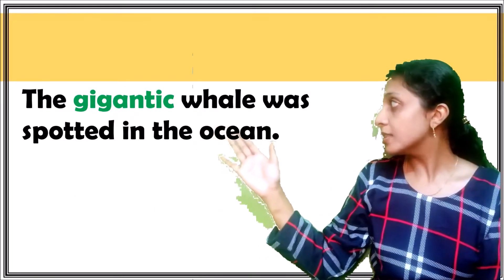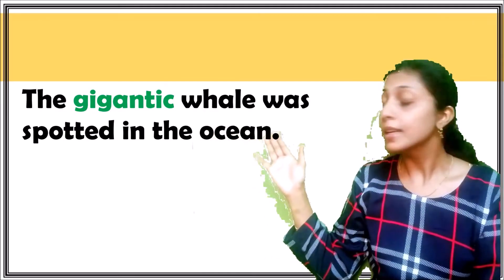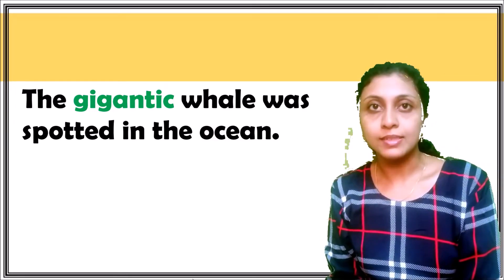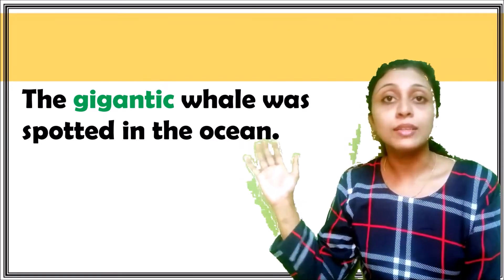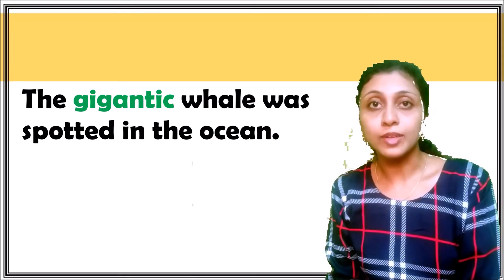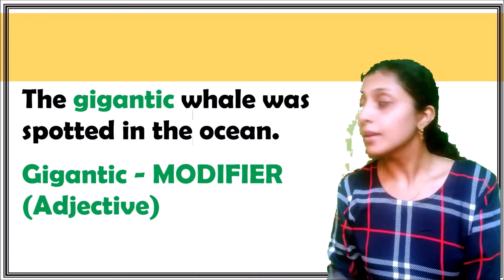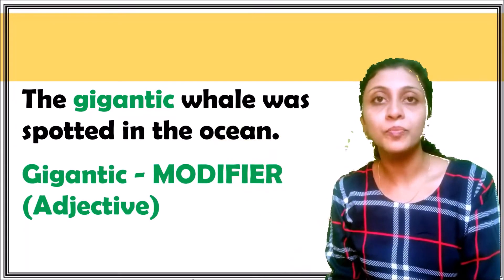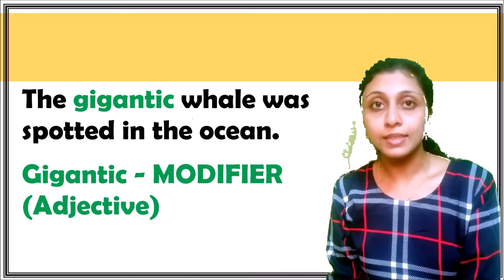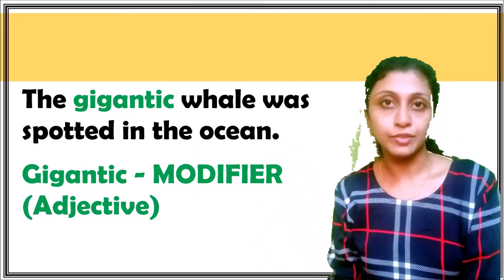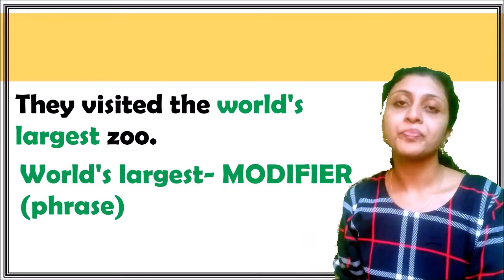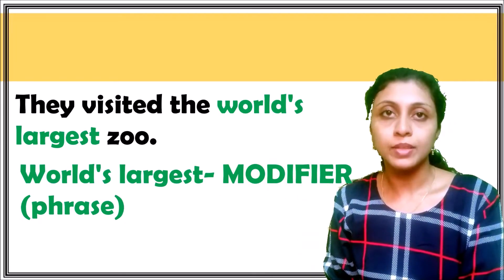The gigantic whale was spotted in the ocean. Can you spot the modifier in this sentence? The noun is 'whale,' and the word that modifies it is 'gigantic.' Therefore, 'gigantic' is referred to as a modifier — in this case it acts as an adjective.